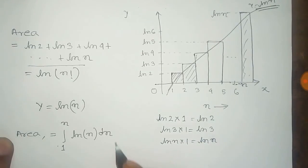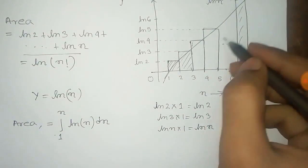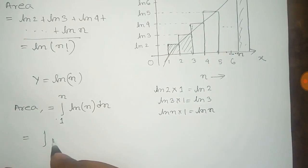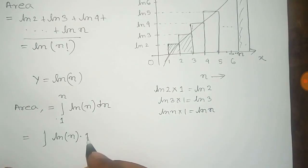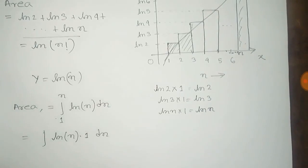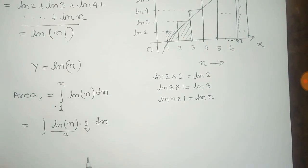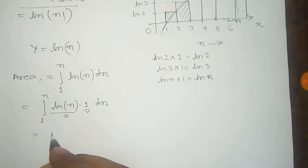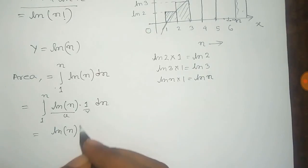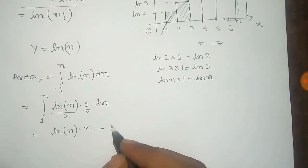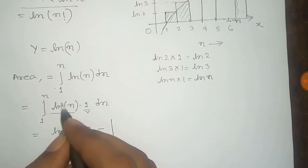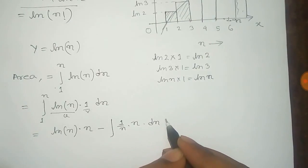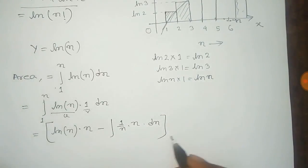This is the area under the smooth curve, and we have to integrate it. To integrate, we multiply by 1 and apply the integration by parts formula — that is, integral of u times v. So the formula gives: log n, that is u, times the integral of v, which is n, minus the total integral of the derivative of u, that is 1 over n, times the integral of 1, that is n, with respect to n, with limits 1 to n.